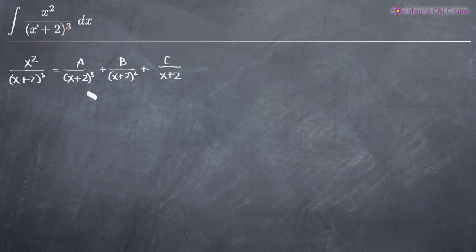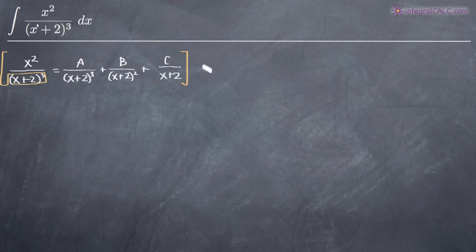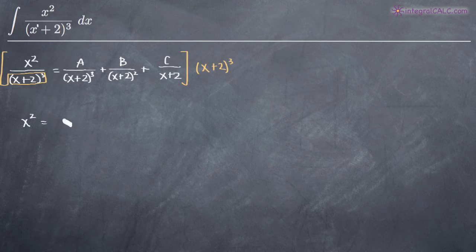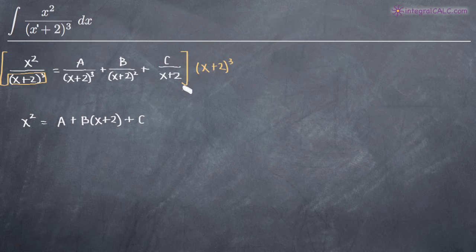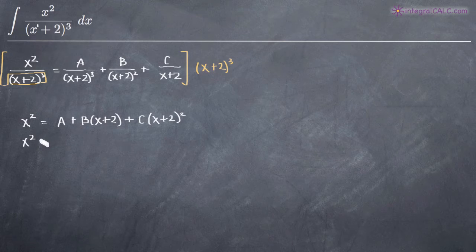Now we need to multiply both sides of our equation by the denominator from the left-hand side — so we're going to multiply both sides by x plus 2 to the third power. On the left-hand side, that cancels the denominator and we're left with x squared. When we multiply by A over x plus 2 cubed, it cancels the denominator and we're left with A. For the B term, we're left with x plus 2 to the first power, and for C over x plus 2, we're left with x plus 2 squared.